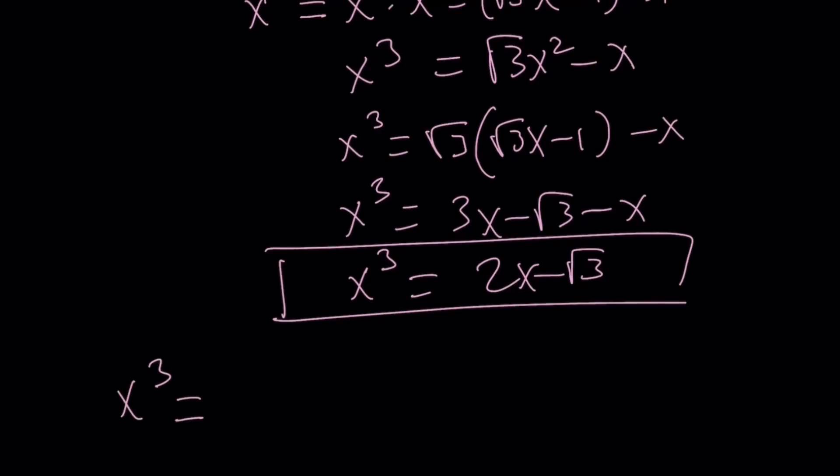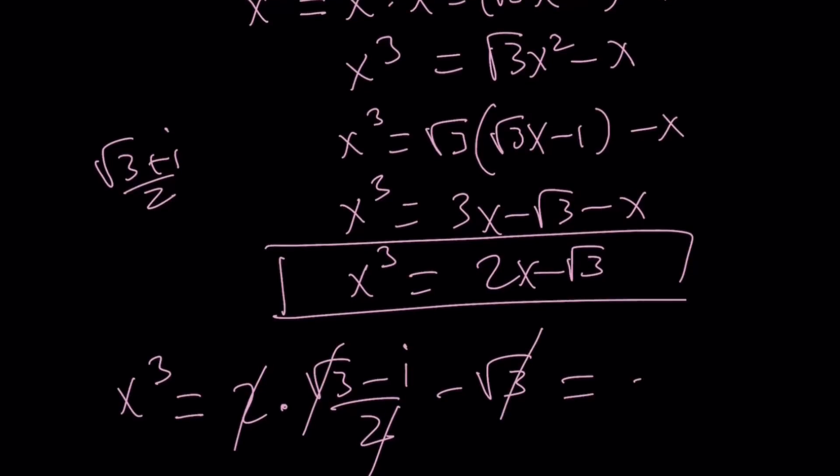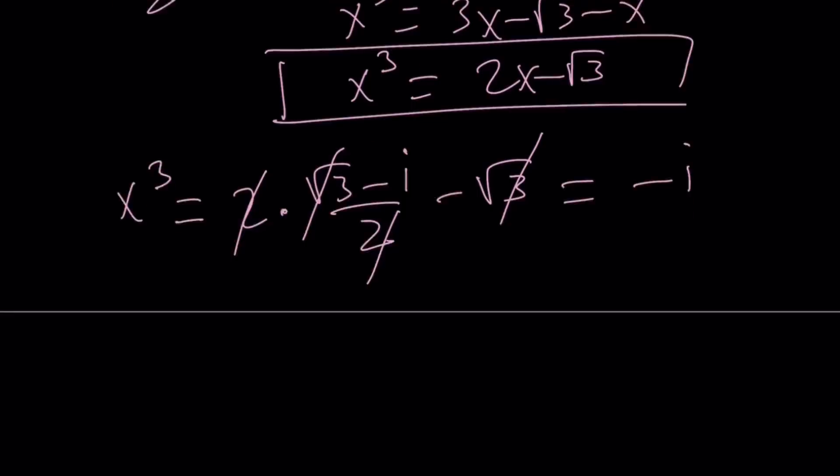So, x cubed is equal to 2 times, what was the value of x that I used? Square root of 3 plus i over 2. If you want to use the negative one, that's perfectly fine too. Let's go ahead and use square root of 3 minus i over 2 minus square root of 3. The 2 cancels out, and the square root of 3 cancels out, and I get negative i. If you use the other one, you would get positive i, but that doesn't matter.